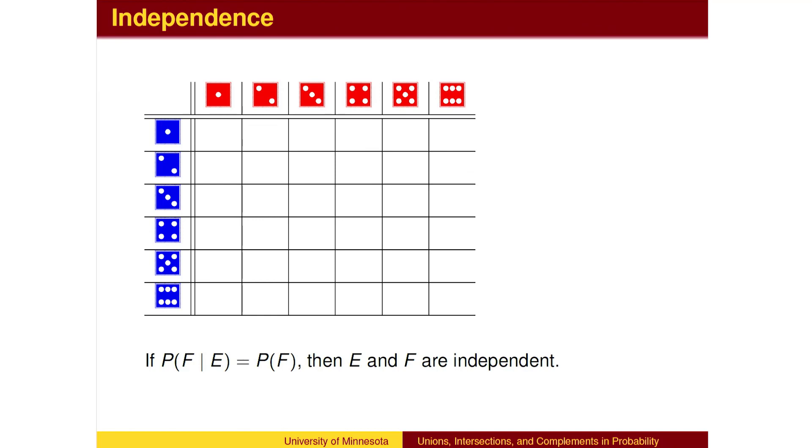Sometimes, E and F have nothing to do with one another. What did we roll on the red die? If I tell you that the blue die was 6, it gives us no information relevant to the red die. The probabilities don't change for the red die.